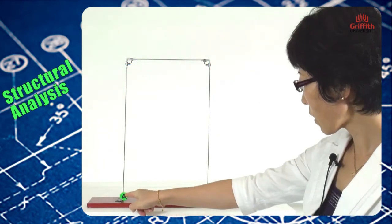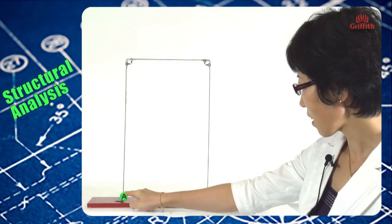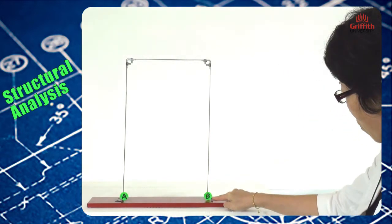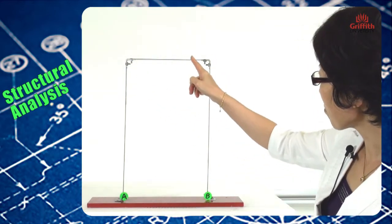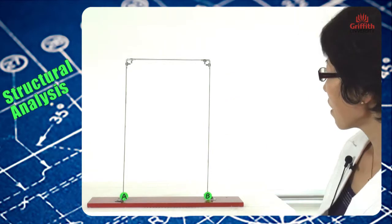In this frame, support A is a pin and support B is fully fixed. Connections here between the beam and the columns are rigid.